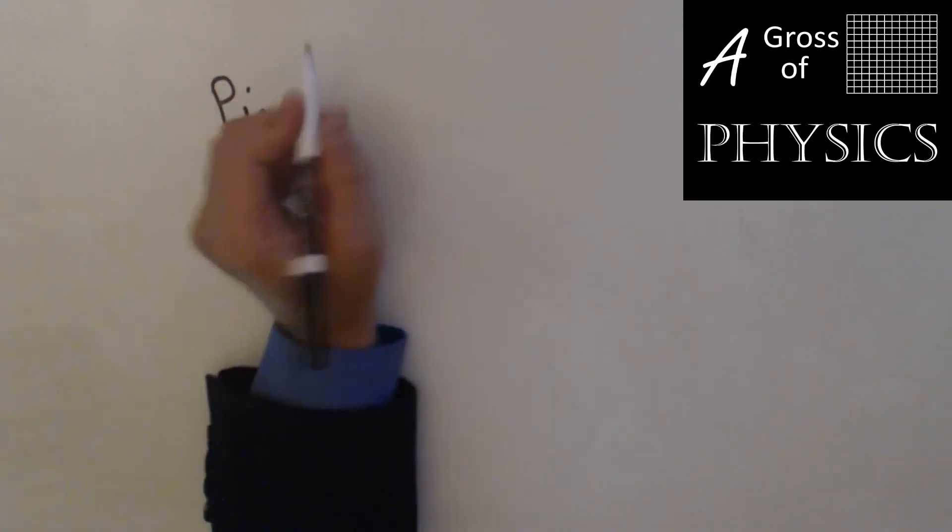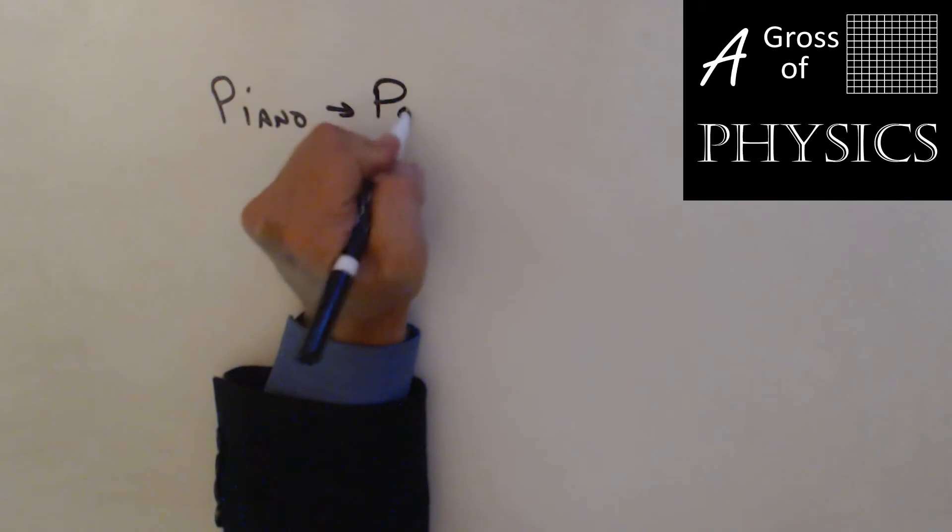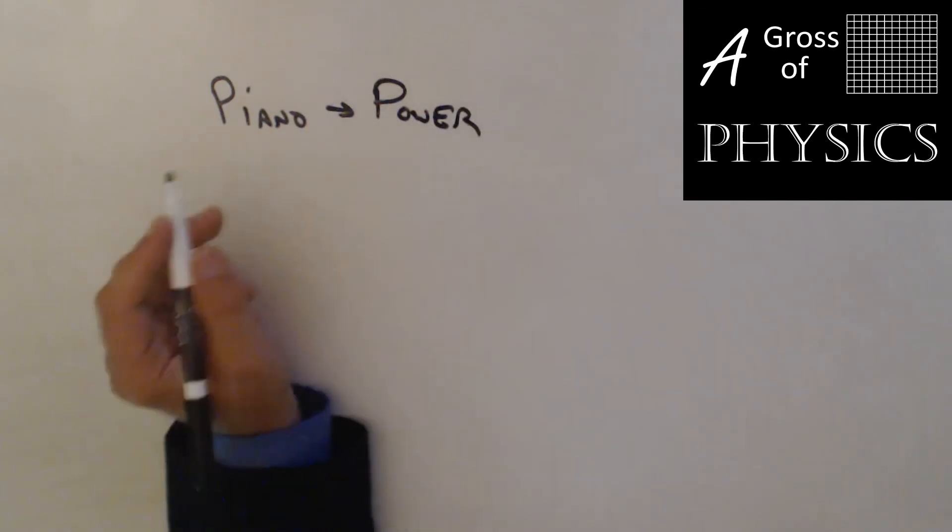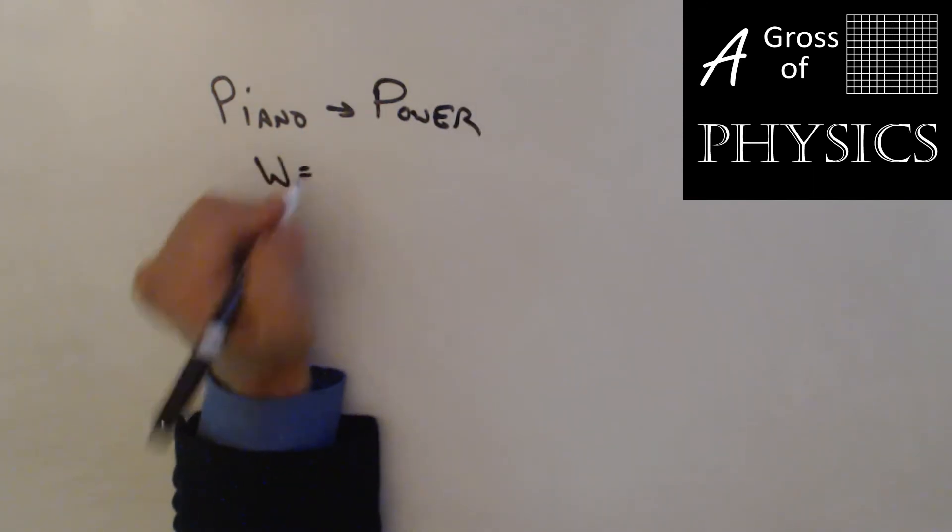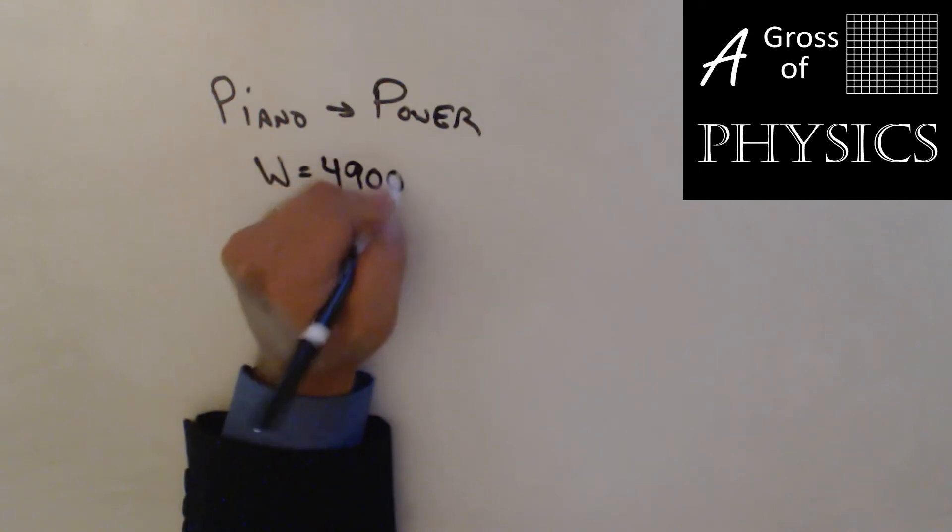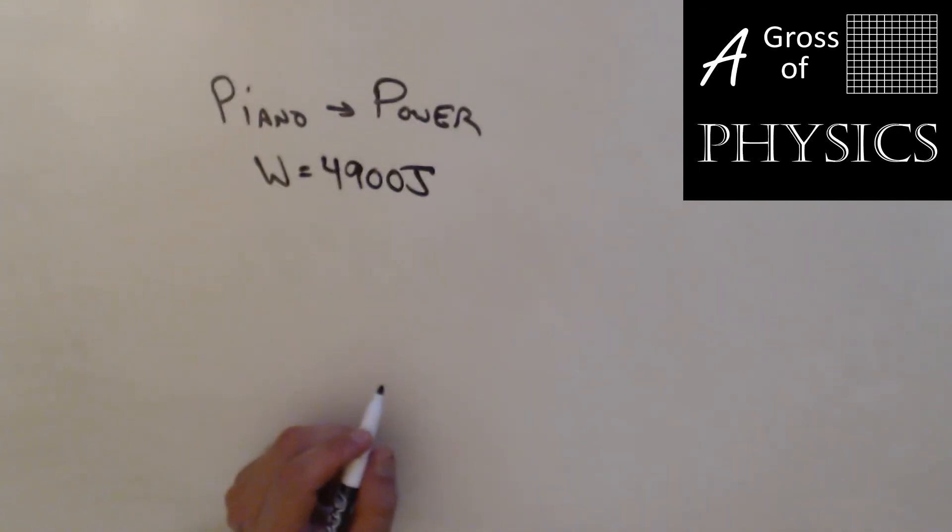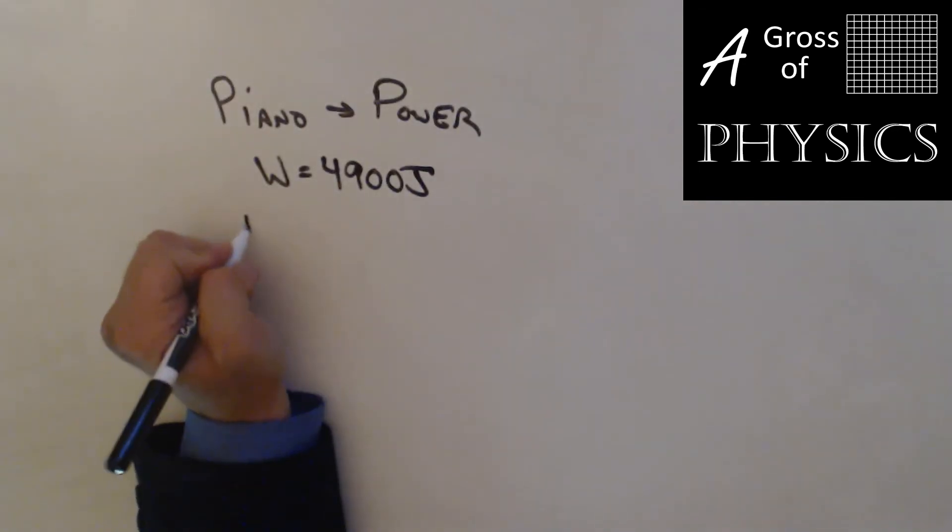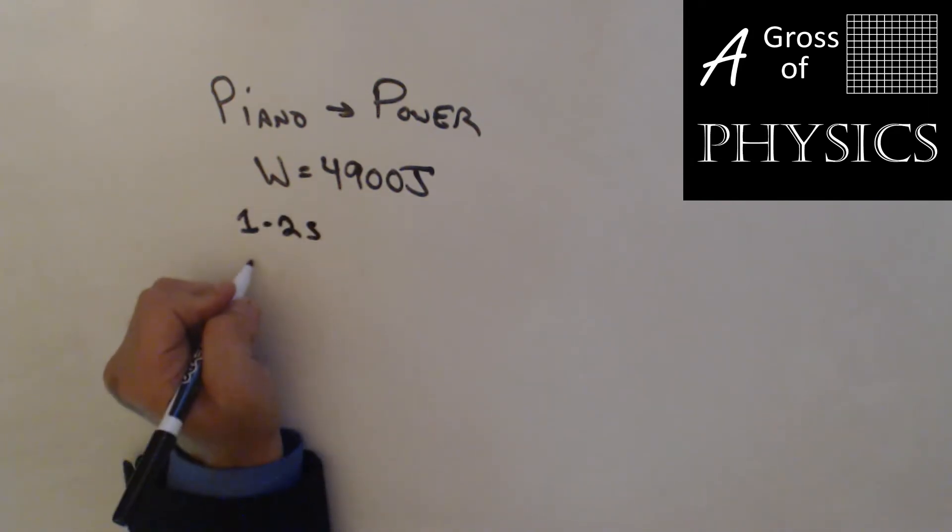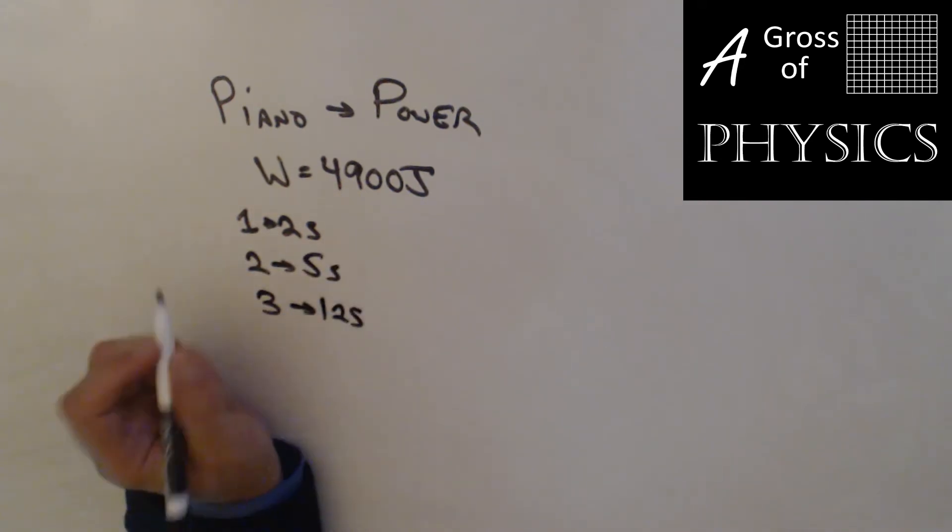Let's revisit the piano problem and just discuss it in terms of power. We already found that the work was the same for all three methods, which is 4900 joules. But using method one, it only took two seconds. Method two, five seconds, and method three was 12 seconds.